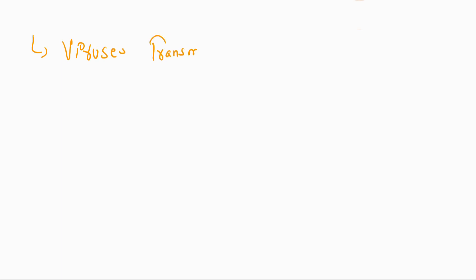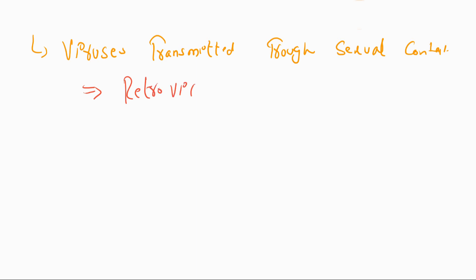The next category is viruses transmitted through sexual contact. Examples of these viruses are retroviruses. Retroviruses include human T-lymphotropic viruses, which cause tumors or cancer in humans and animals. This is why we call them retroviruses — they are cancer-causing viruses, and they transmit through sexual contact.